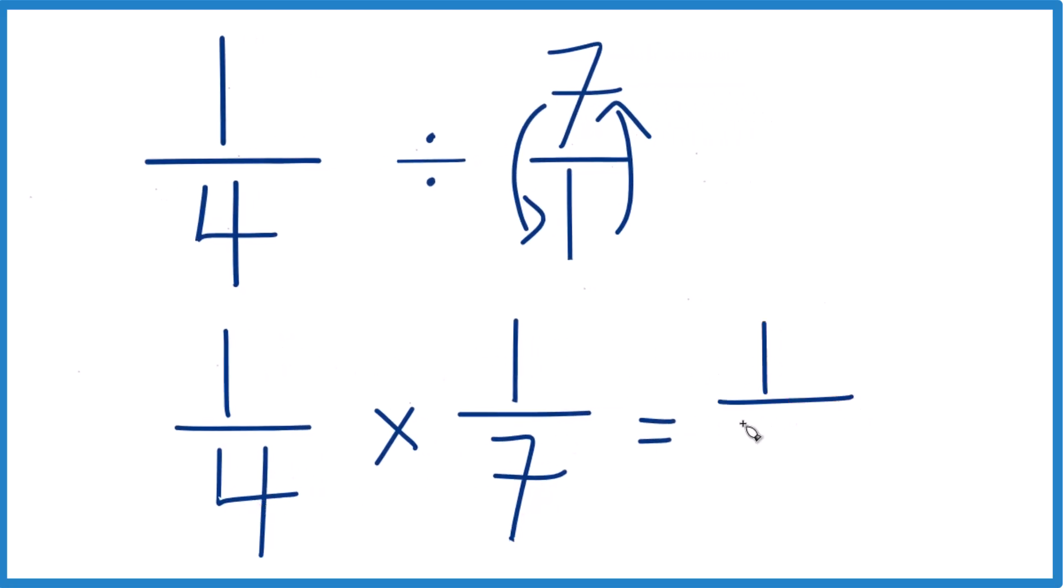So one-fourth divided by seven, or one-fourth times one-seventh, that equals one-twenty-eighth.